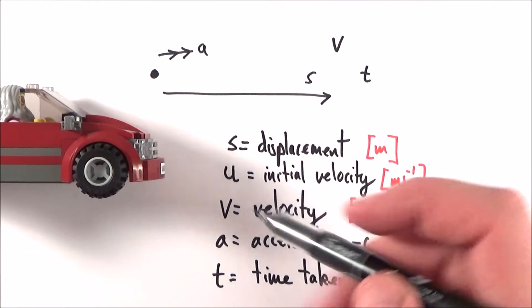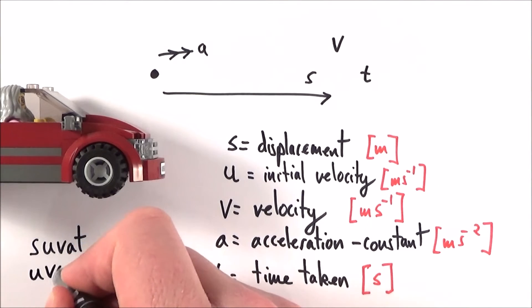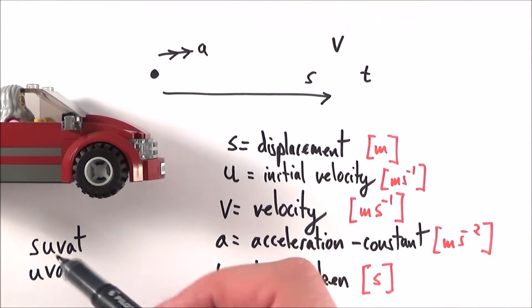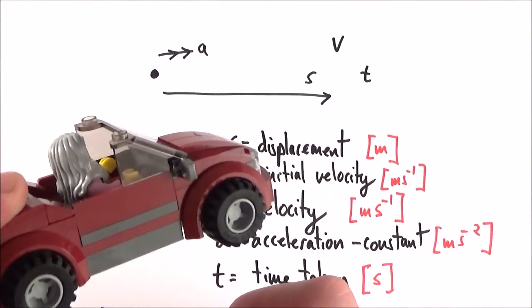These equations of motion are sometimes called the SUVAT equations or UVAST—the same letters in a different order. These equations describe the motion of objects undergoing uniform acceleration.